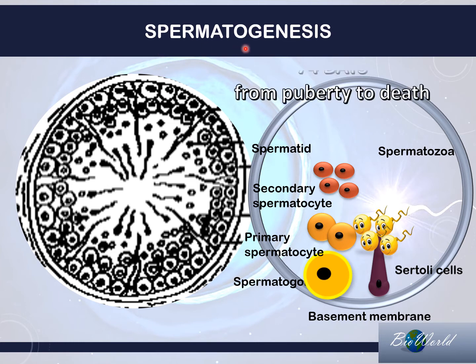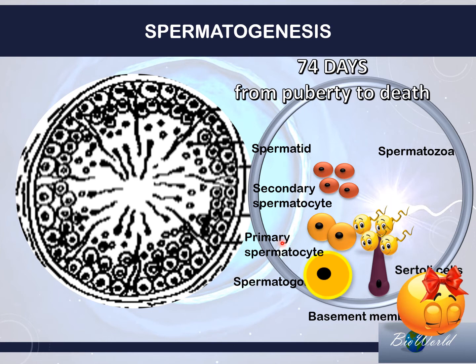The process takes 74 days to complete and occurs in the male from the moment of puberty — that is about 15 years old — until the death of the male. So that completes the story of spermatogenesis. Now let's move on to the story of oogenesis.